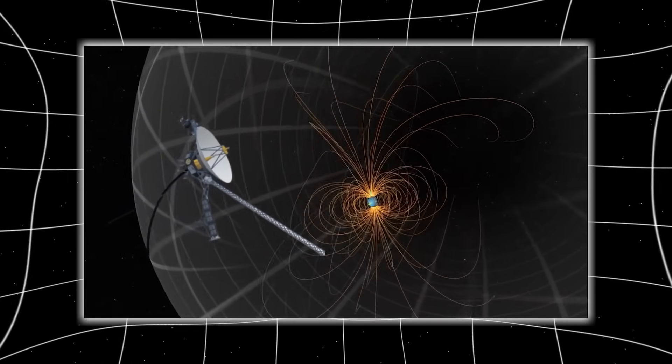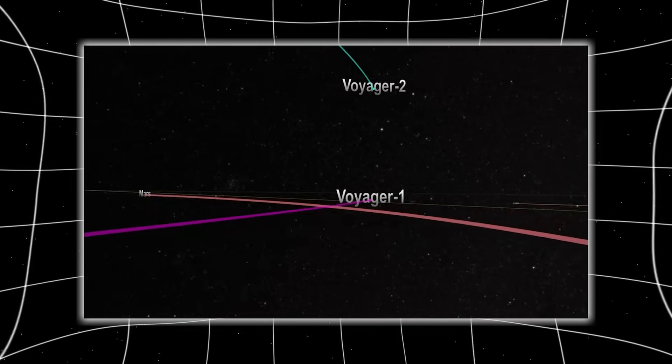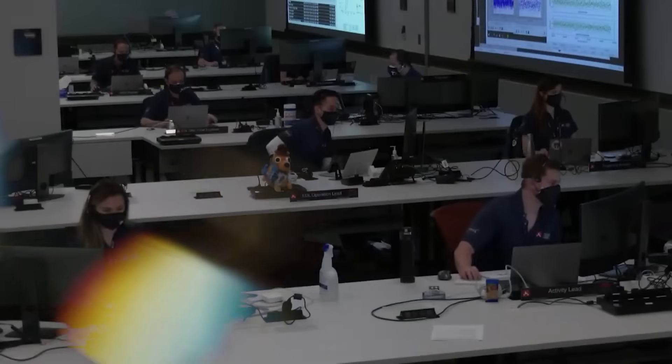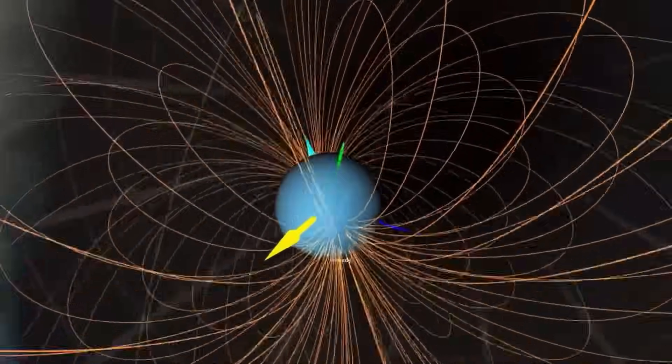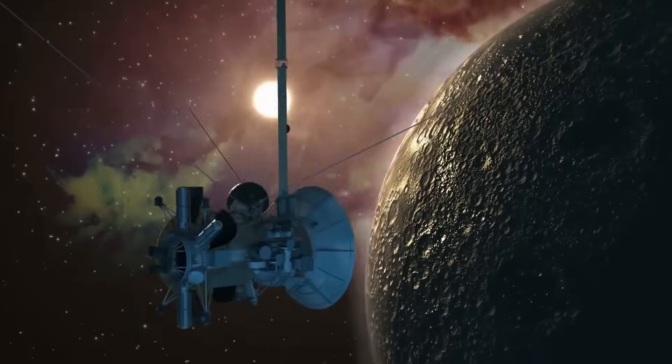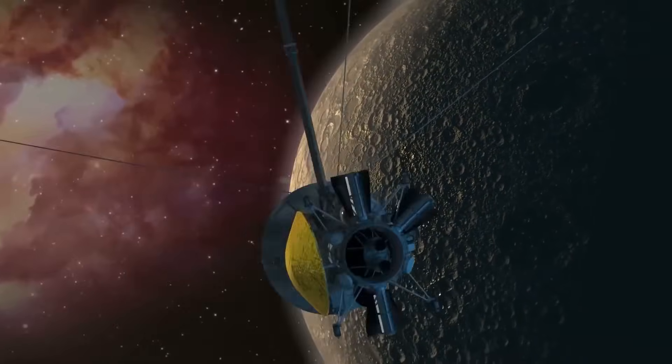The last bursts of strange data have tapered off. The plasma readings have normalized. The phantom pulses have gone quiet. Voyager is once again operating normally. But many now wonder, was that the real anomaly? The silence?